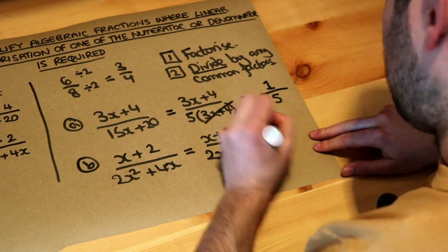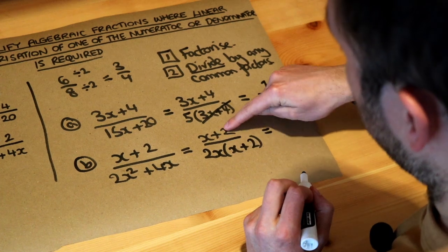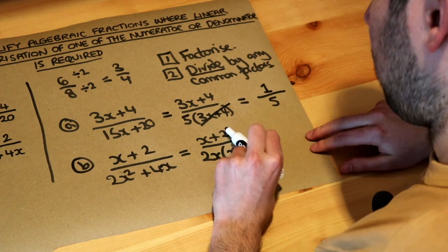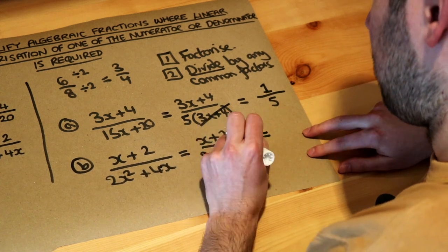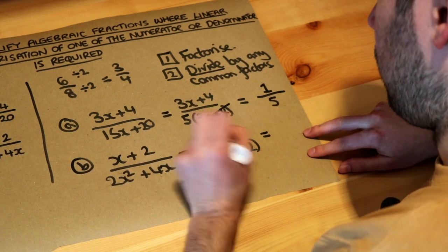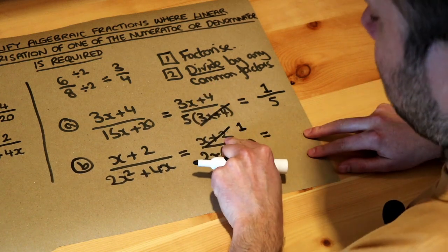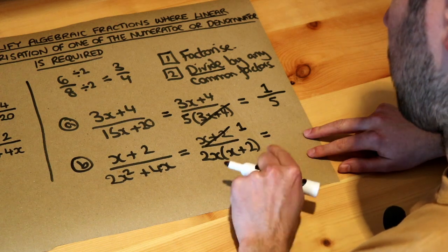And again, we just think, what can we divide the top and bottom of this fraction by? What's common? Well, x plus 2 is in common. So if we divide the top by x plus 2, we just get 1. So if I cross it out, I've got to replace it with 1 because I divide it by itself. x plus 2 divided by x plus 2 is just 1.